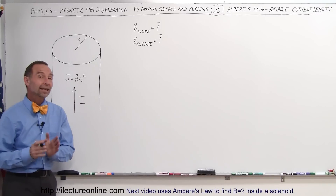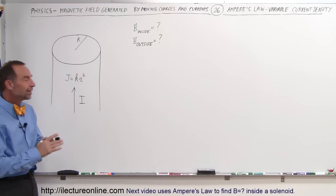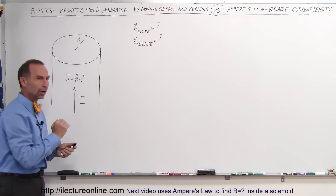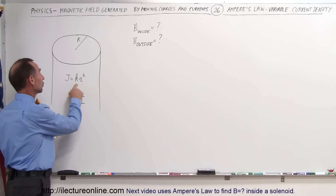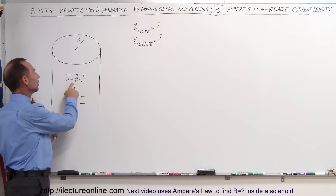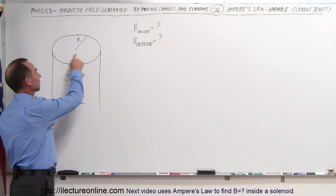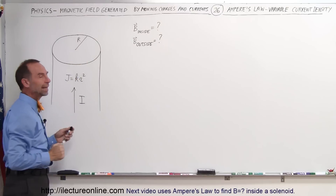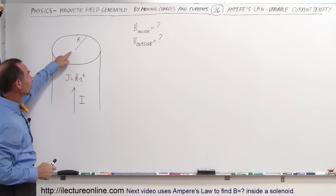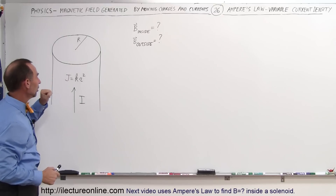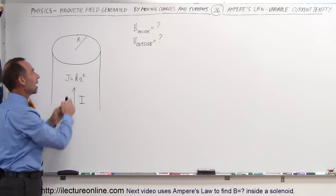Welcome to our lecture. In this example we're going to find the magnetic field inside and outside a conductor. The conductor has variable current density — notice that it increases as the radius increases. It should be zero at the very center and maximum kr² at the very edge. The radius of the conductor is R and the current will be flowing from bottom to top.